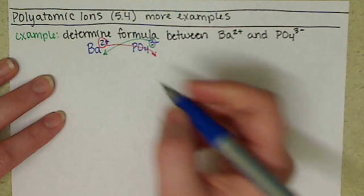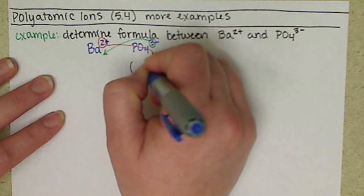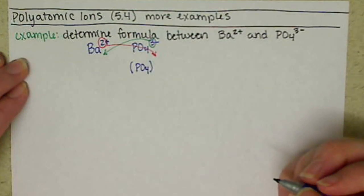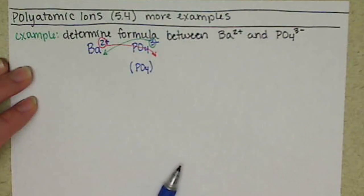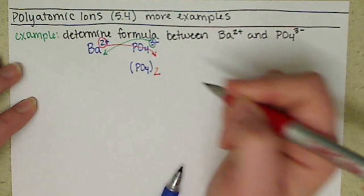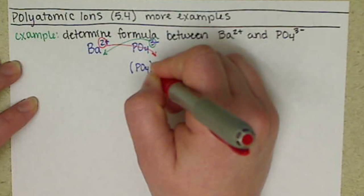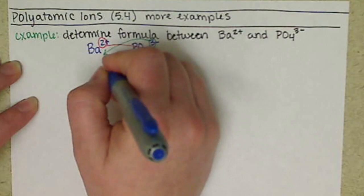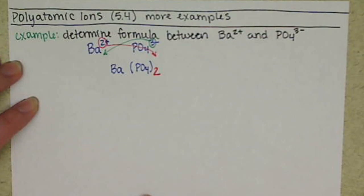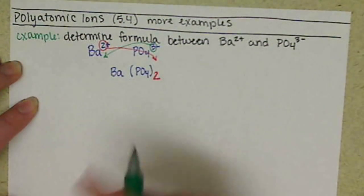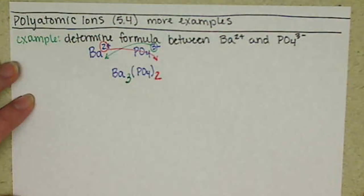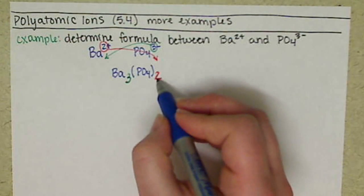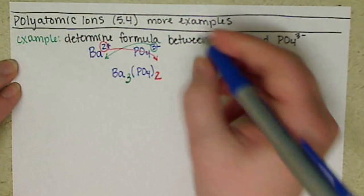When we do that, if we need multiple polyatomics, what we want to do is put parentheses around our polyatomic. We're saying that PO4 is staying together and in this case we need two of them, so we need two PO4s. We always list our metal first and we need three of those for every two of our phosphates.